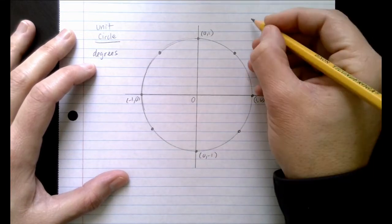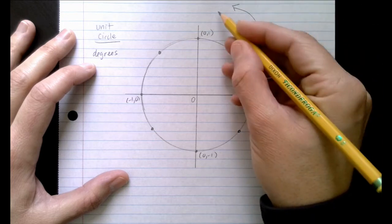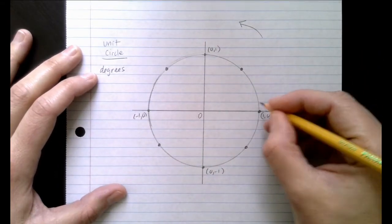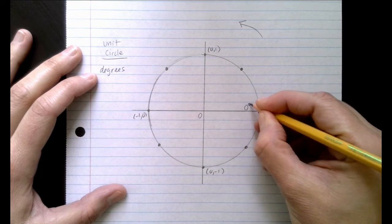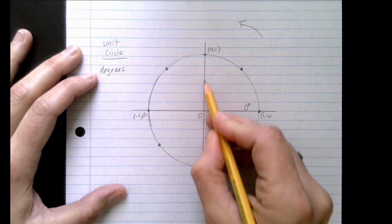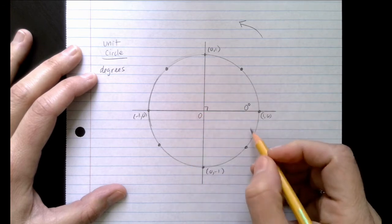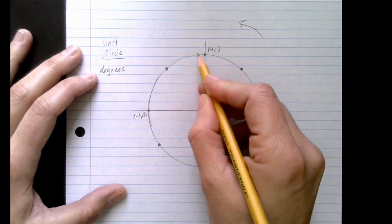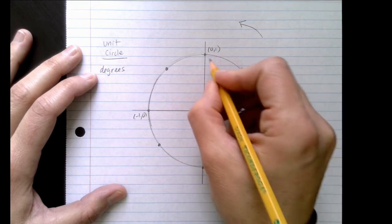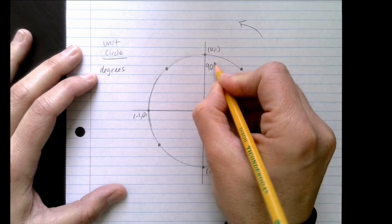Now when you read the unit circle, you go in a counterclockwise direction. So if I start right here, I am at 0 degrees. Now let's look at this angle right here. This is an exact right angle. That means if I go all the way up to here, I've traveled 90 degrees.